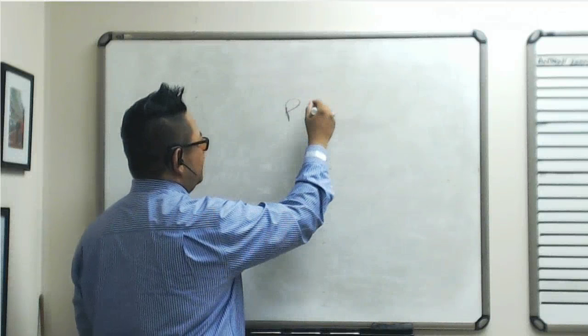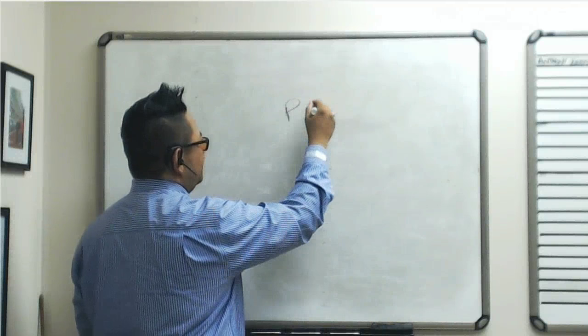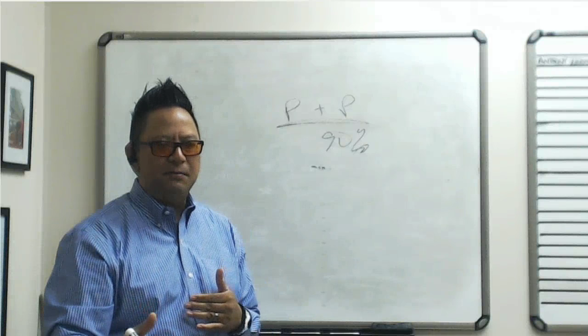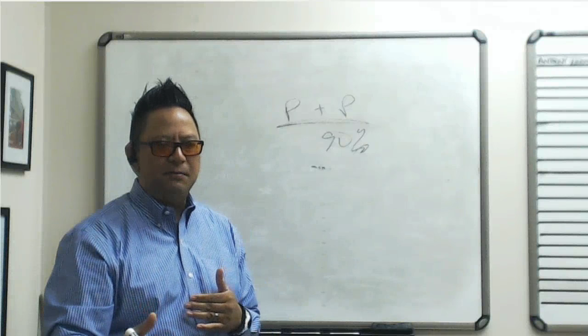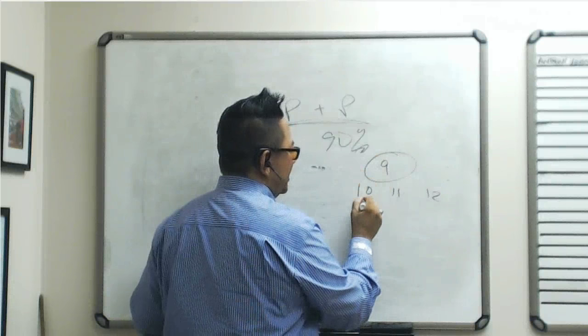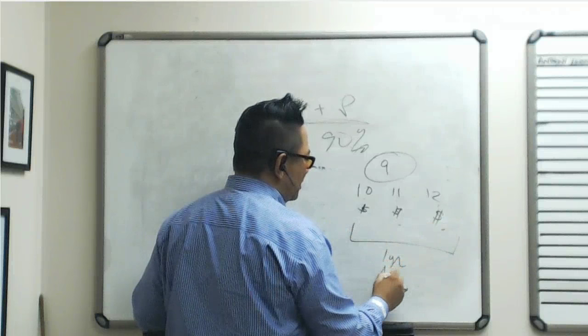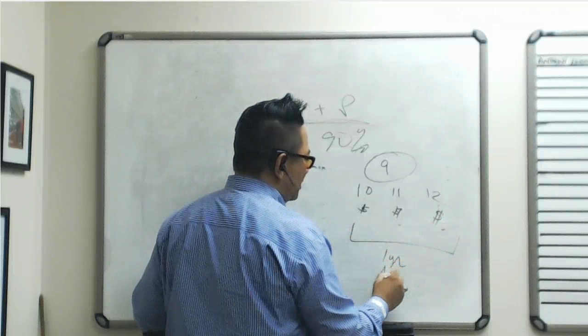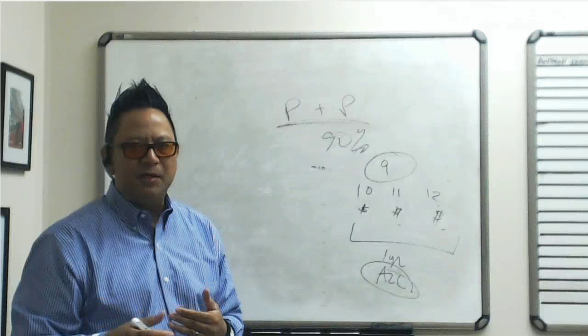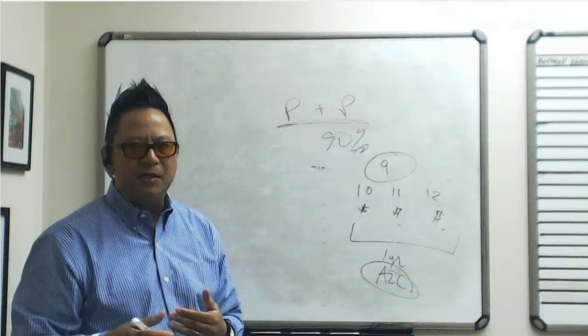We call it P&P — placement and persistency. Your target is 90%: you place 90% of applications, and 90% of your policies are still in force at nine months, ideally twelve. Because at twelve months you get the rest of your commission — months ten, eleven, and twelve are paid as earned. If you place a $1,000 policy at a 55% commission rate and they kept it for twelve months, you should have $550.